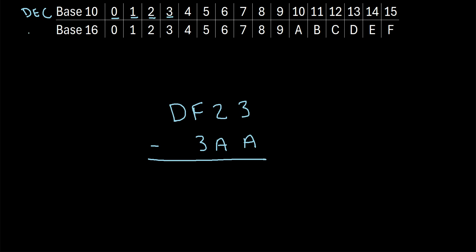But in a base 16 system, or sometimes called a hexadecimal system, we start at 0 and we go up to 9, but once we hit 10, instead of writing 10, we use an A to represent 10. We then use a B to represent 11, C to represent 12, D represents 13, E represents 14, and F represents 15.